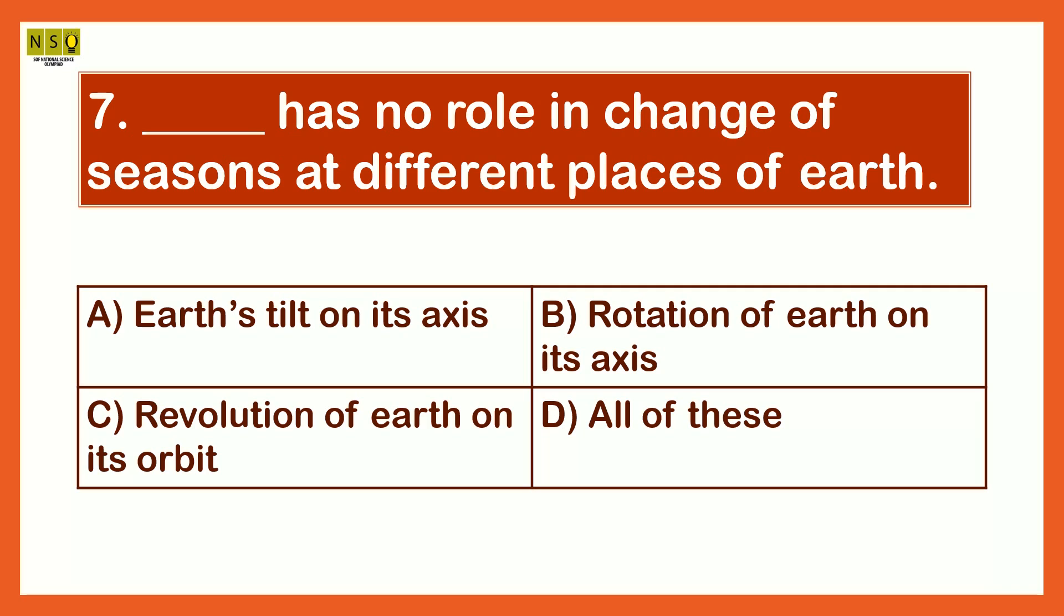What has no role in change of seasons at different places of Earth? The options are Earth's tilt on its axis, Rotation of Earth on its axis, Revolution of Earth on its orbit.